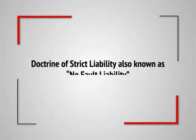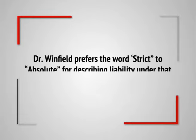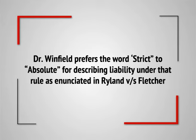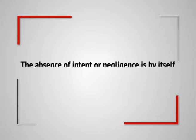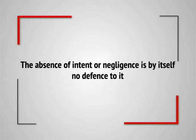The doctrine of strict liability is also known as no-fault liability, meaning even without fault the defendant is liable — despite no negligence and no desire to cause damage to the plaintiff. Dr. Winfield prefers the word 'strict' as against 'absolute' for describing the liability under the rule as enunciated in Rylands v. Fletcher. The nature of liability is absolute, though subject to certain qualifications which take away a great deal of its absolute character. It is also absolute in the sense that the absence of intent or negligence is by itself no defense.